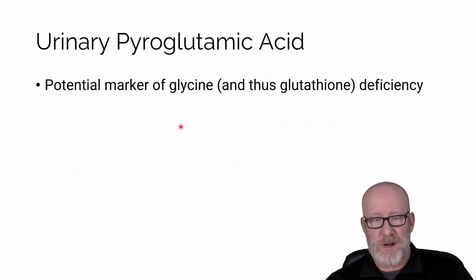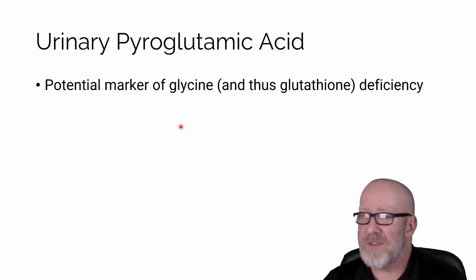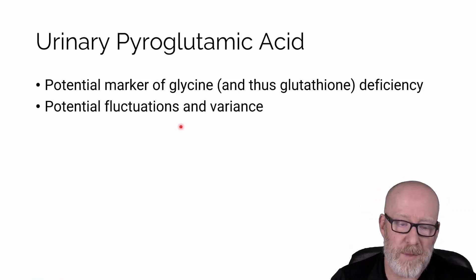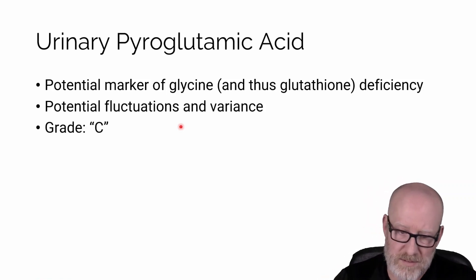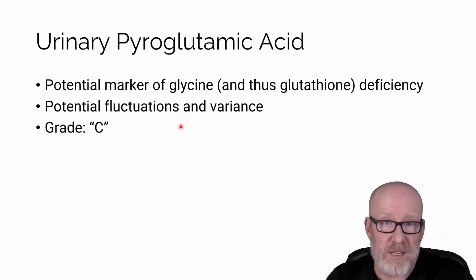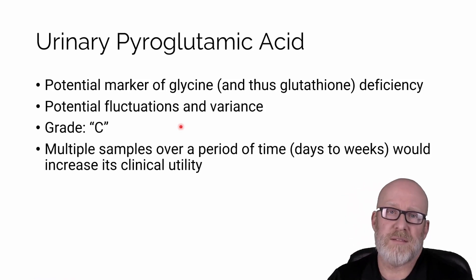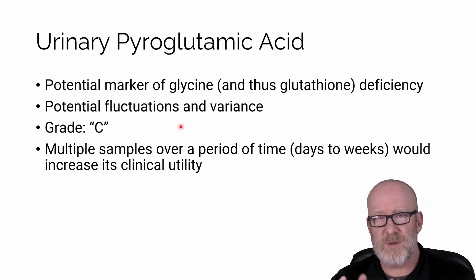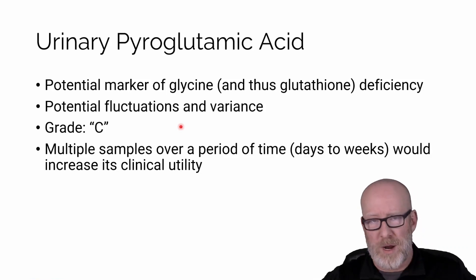Anyhow, urinary pyroglutamic acid, it is a potential marker of glycine as far as I'm concerned, and thus maybe glutathione deficiency, although that's difficult to actually say, not a one-to-one marker. There are potential fluctuations and variance. There does seem to be some kind of feedback, feed-forward system. And so therefore, I give it a grade of C. It's not totally a waste. There is some clinical utility to it. However, as with the case of some other markers we've looked at, multiple samples over a period of time from days to weeks would give you a better idea of what was actually going on with somebody, rather than what could potentially be these huge fluctuations.